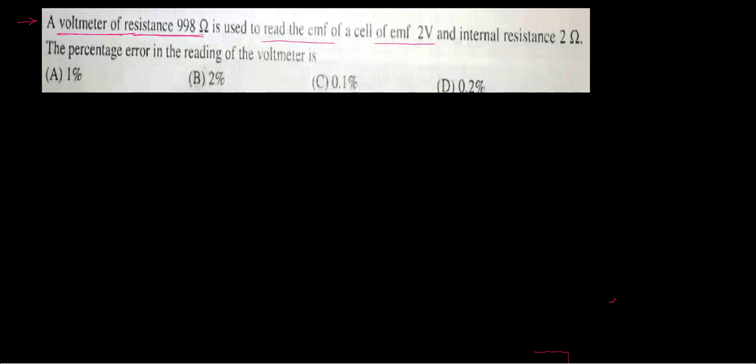There is a voltmeter of resistance 988 ohms. It is used to read the EMF of a cell of 2 volts and internal resistance of 2 ohms.